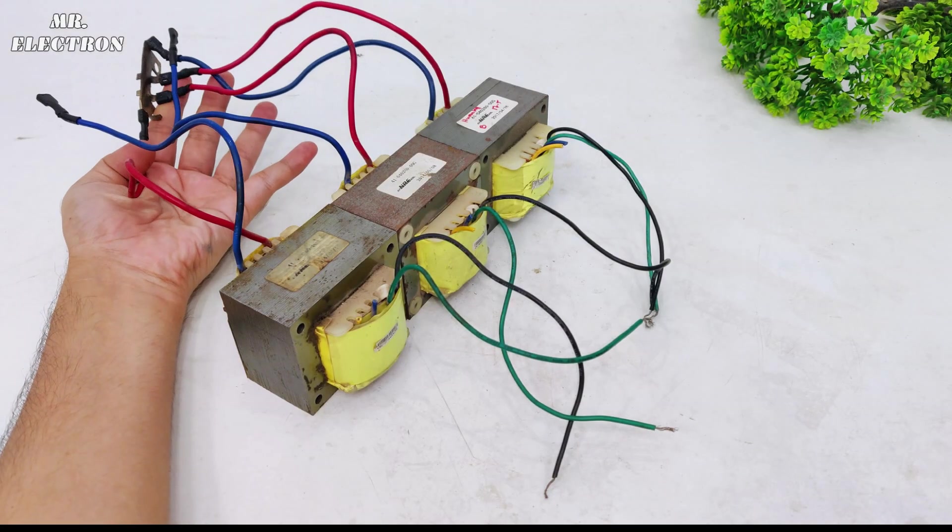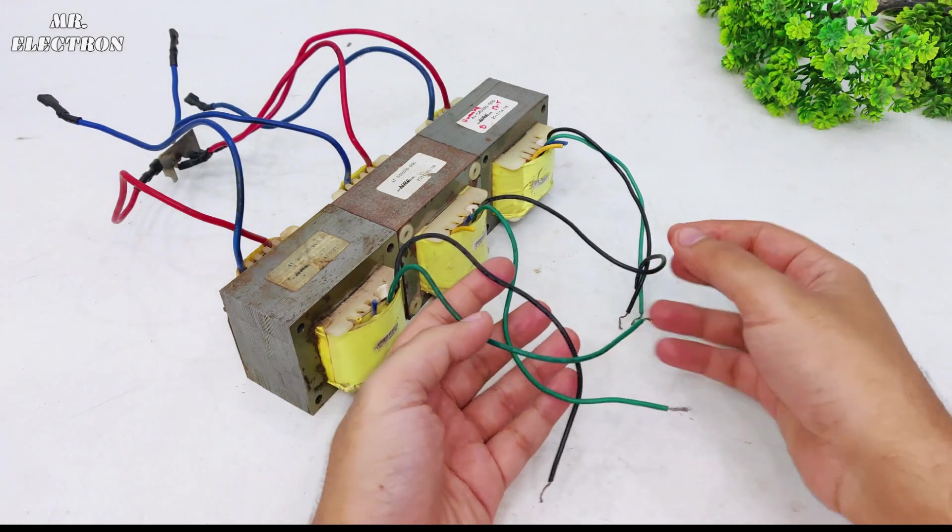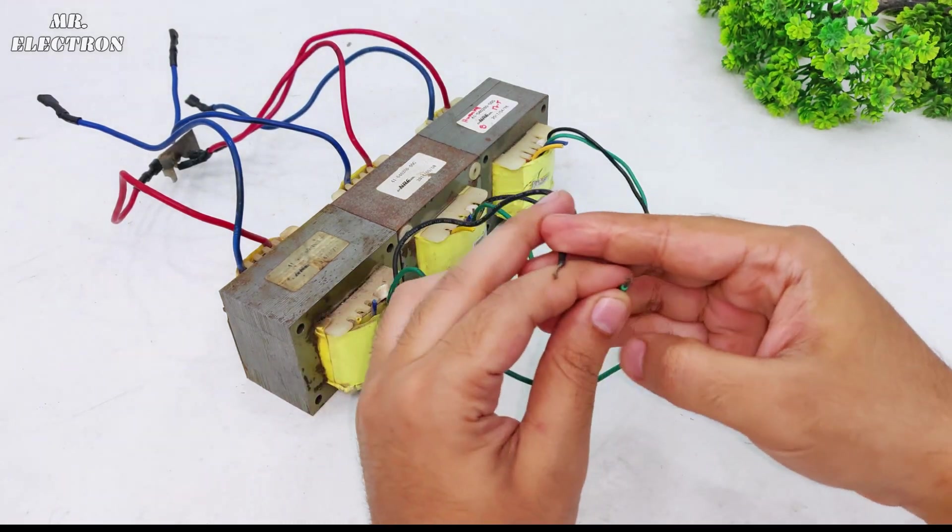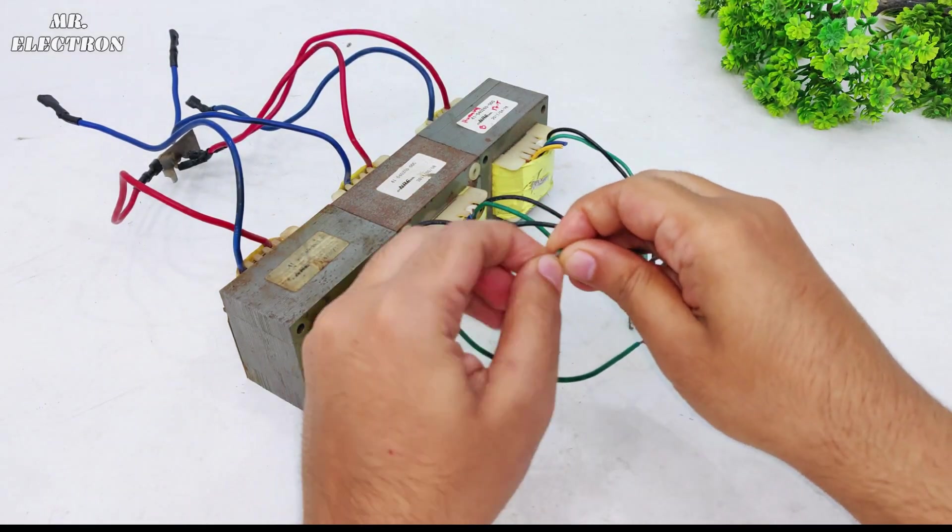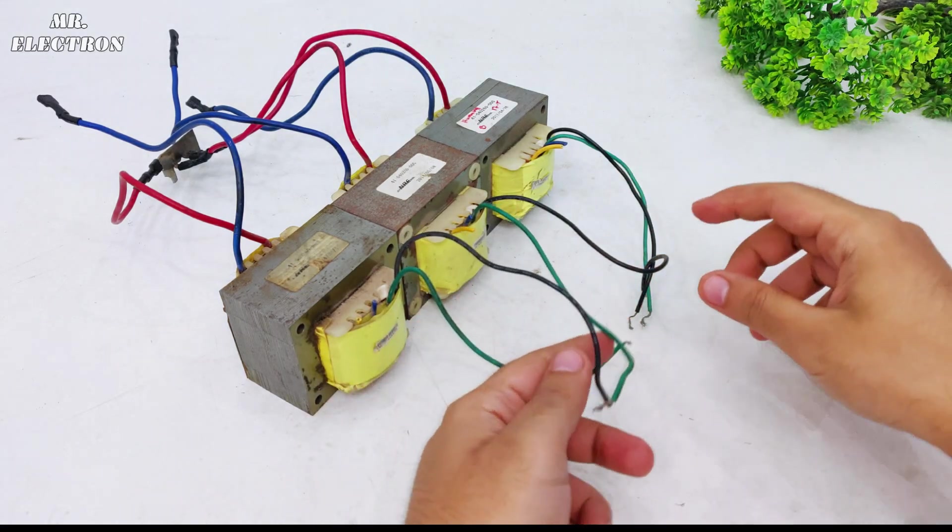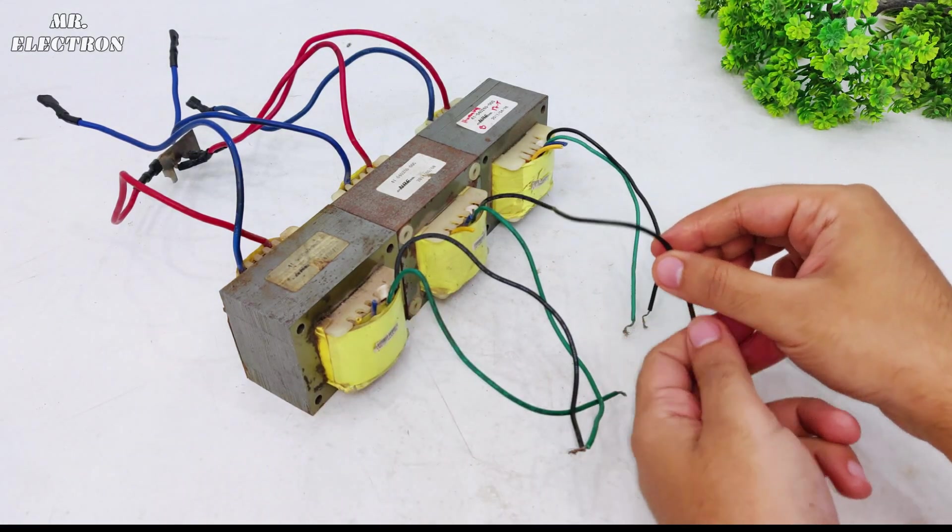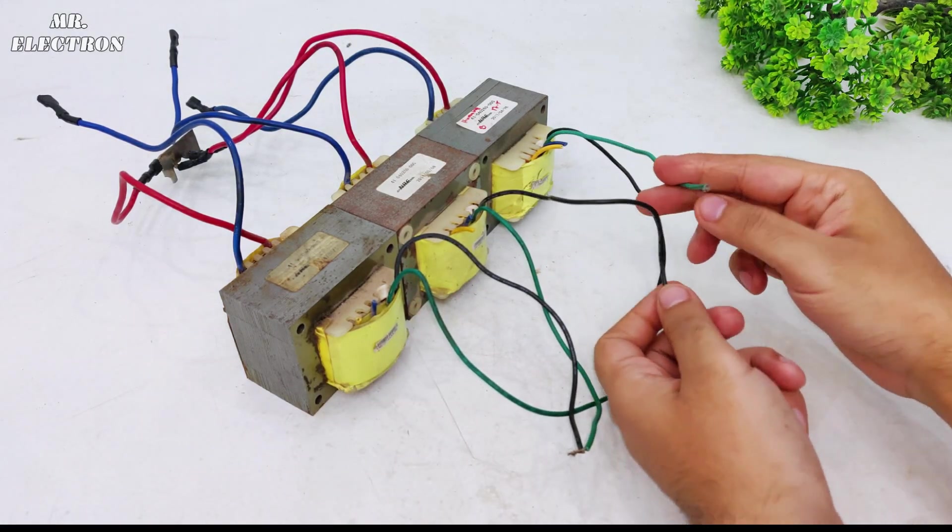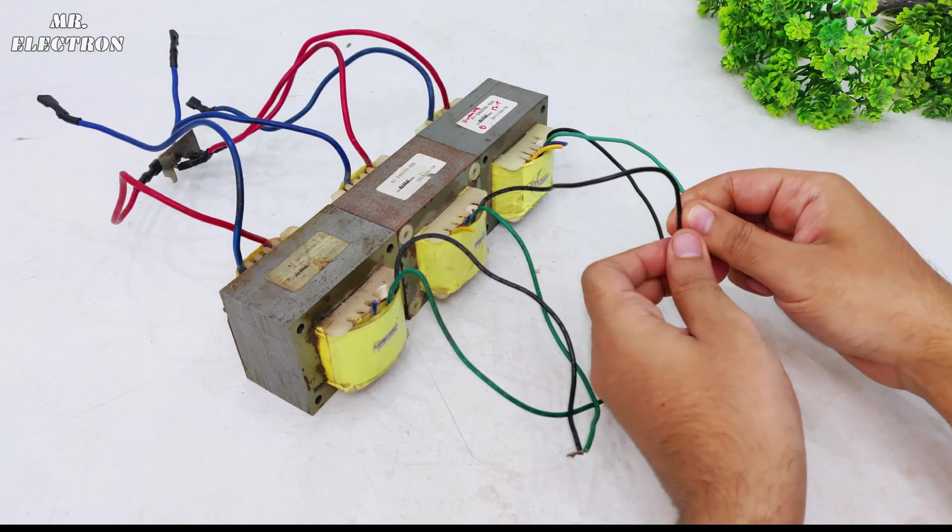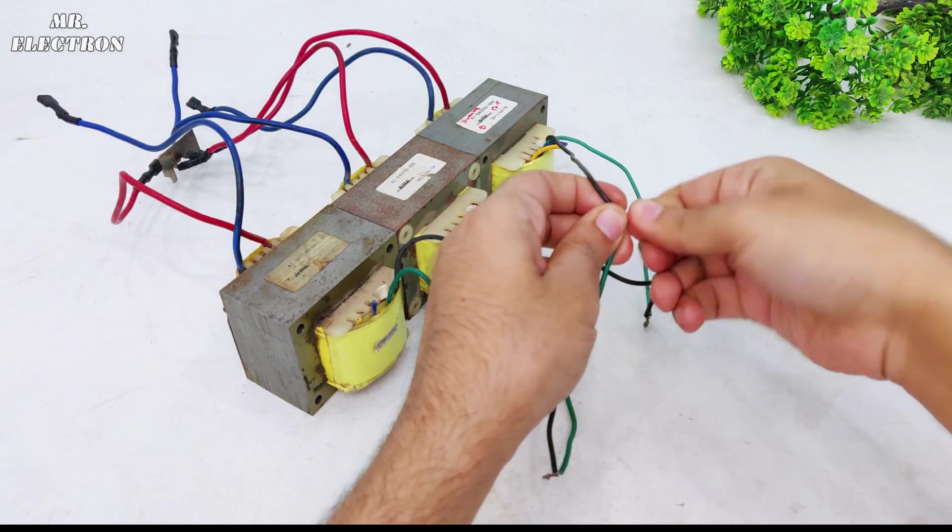Now for the last try, the secondary remains star connected. While for the primary high voltage side, I'm going to connect it to delta for which the black wire of first transformer will be connected to the green wire of the next transformer and then black wire of the next transformer will be connected to the green wire of the last transformer. And after that, the remaining two wires.